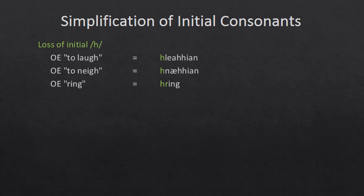A similar word for whinny, which is a little bit like a horse laughing. Hnaachian — isn't that right? A horse goes hnaa. Even the word for ring was not just ring but had an initial HR cluster.